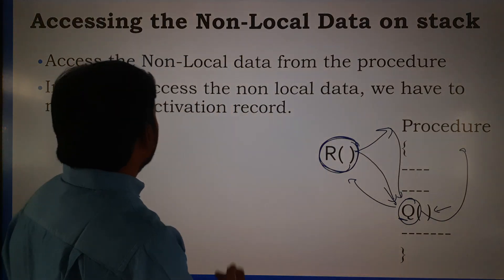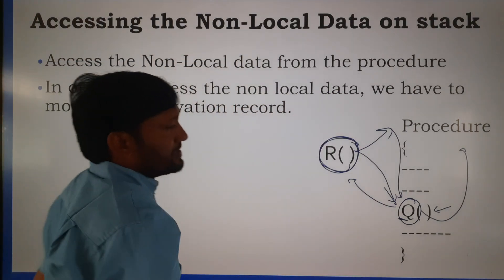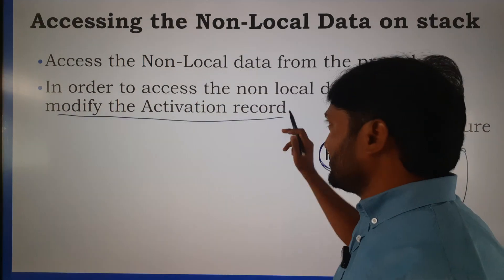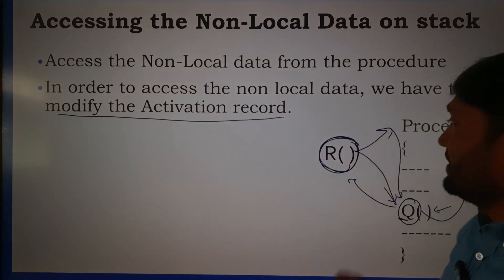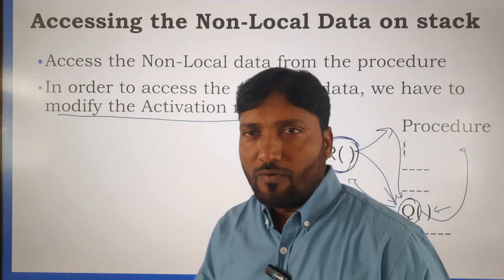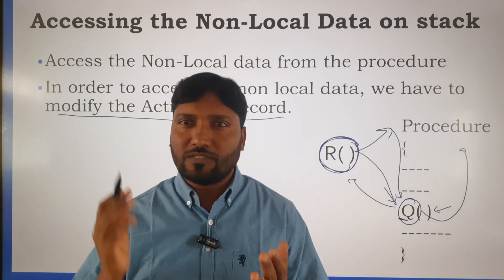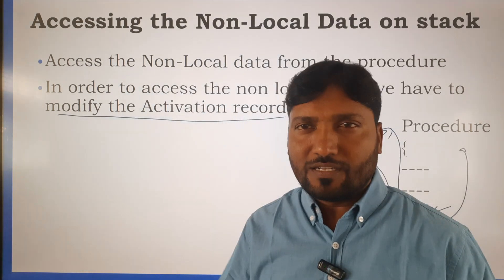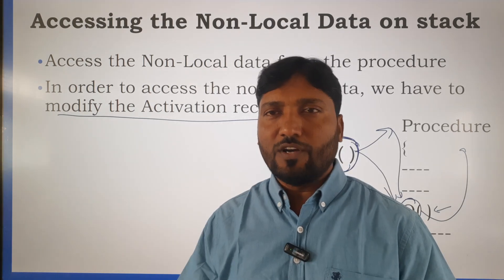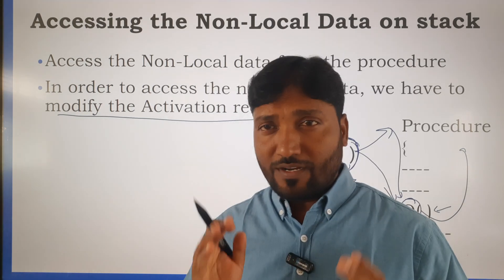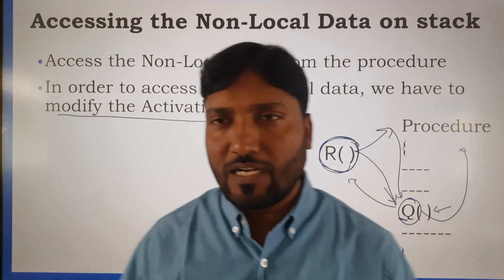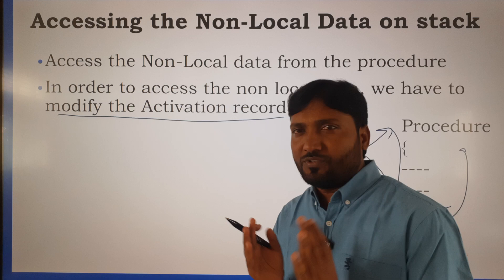Now, to access the non-local data from the procedure, we need to modify the activation record. In order to access the non-local data, we have to modify the activation record. As we know, the activation record has seven parameters, already discussed in the last video. Please watch my previous video to understand clearly what is the activation record. In this video, we need to understand how we can modify the activation record.